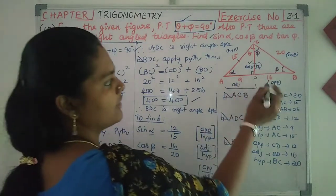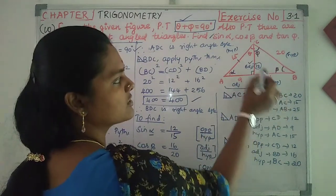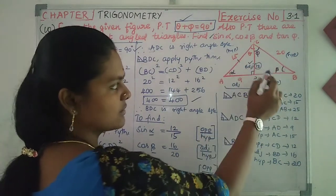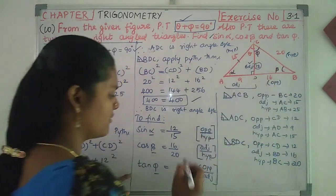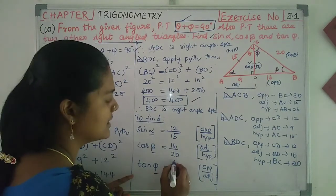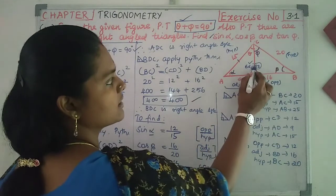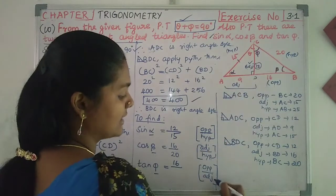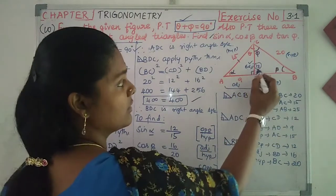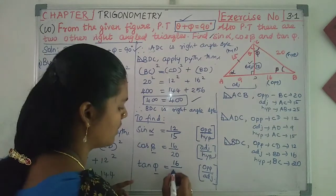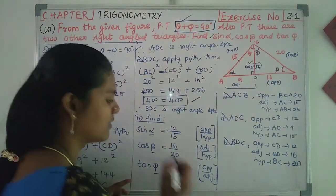Vita (beta) is opposite. Opposite value is 16 divided by the hypotenuse. Adjacent value is 12.